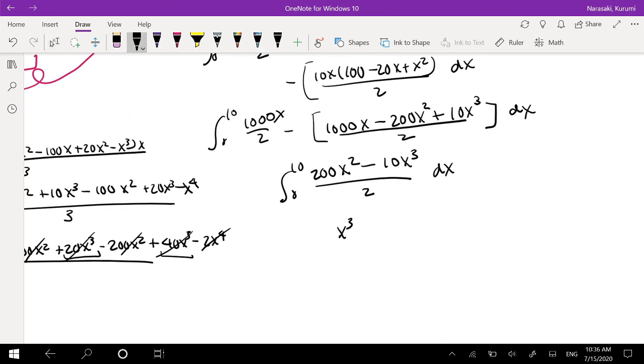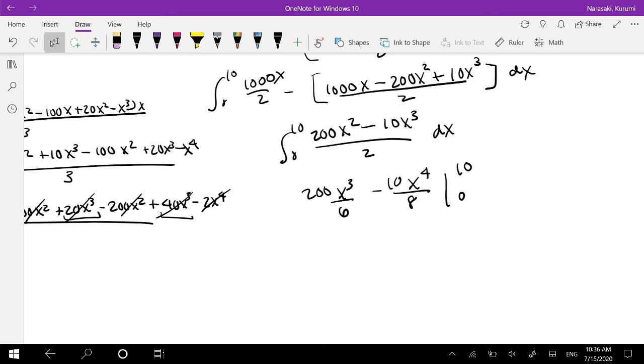Okay, so then this is going to be X cubed times 6 on the bottom, 200. My mental math is not good, so I'm going to write everything out for you. Okay, here we go. Integrating from 0 to 10. So, what would this value be? 200, 10 cubed. Over 6, minus 10 to the 4th, divided by 8.